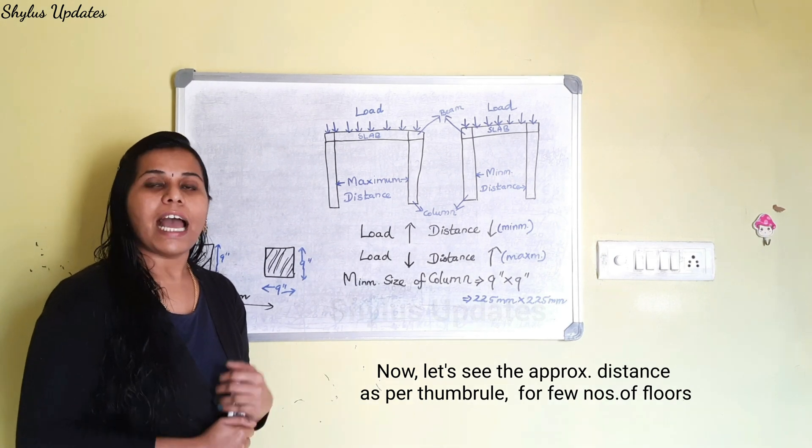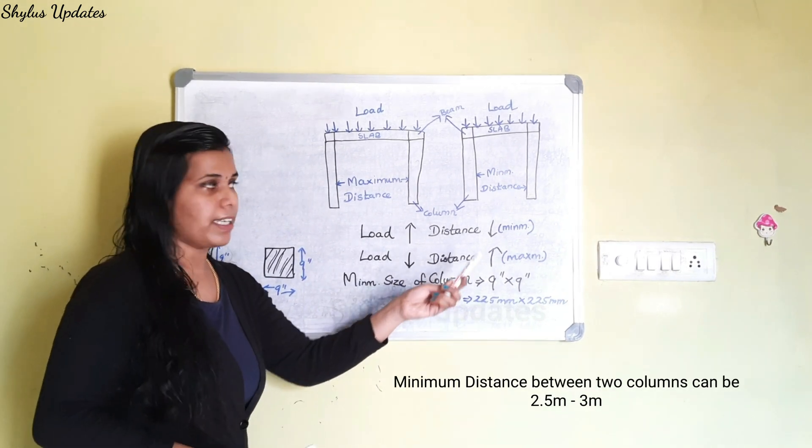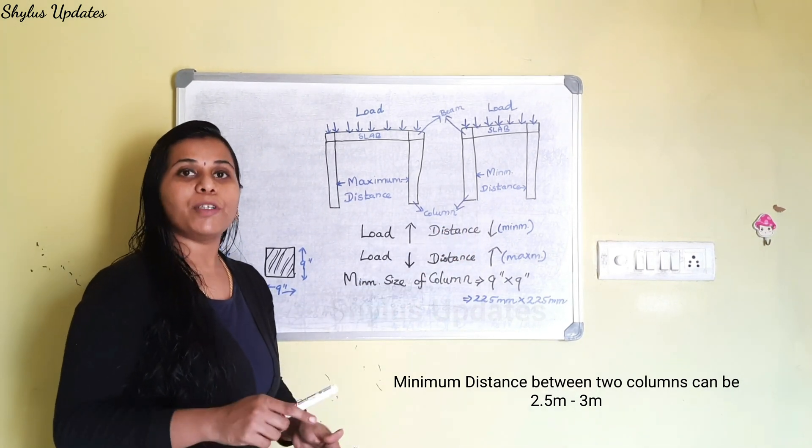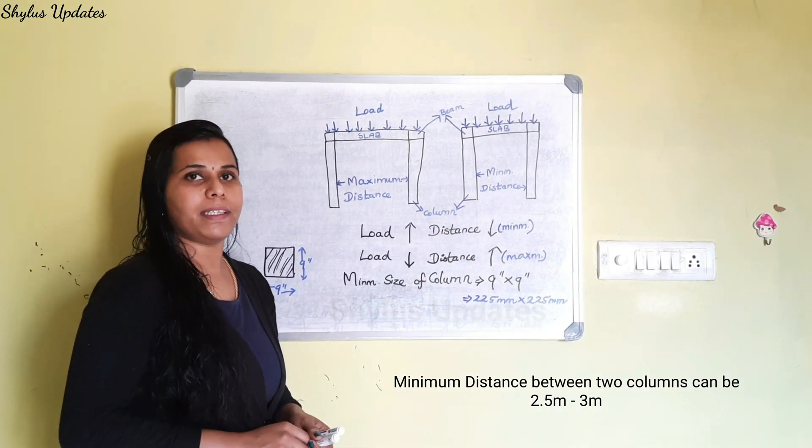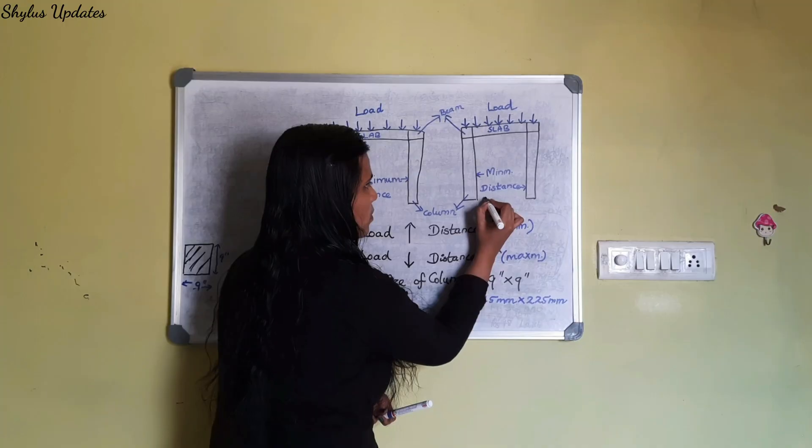Now, let's see the approximate distance as per thumb rule for few numbers of floors. Minimum distance between two columns can be between 2.5 meter to 3 meter, that is, it can be between 8 feet to 10 feet.